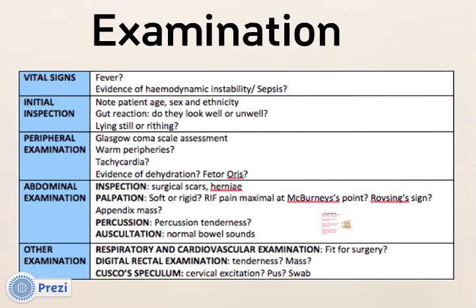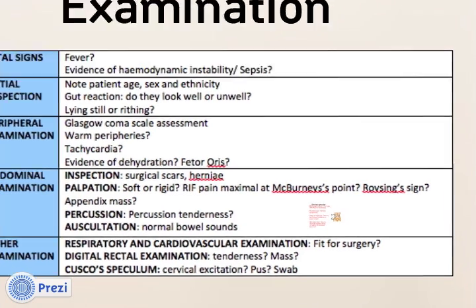For examination, peripherally, you need to decide if the patient is haemodynamically stable or not. On examination of the abdomen, firstly, does this patient have clinical signs consistent with appendicitis, such as pain at McBurney's point? And secondly, is there any evidence of perforation, such as rebound tenderness? Clinical eponyms are explained on screen.